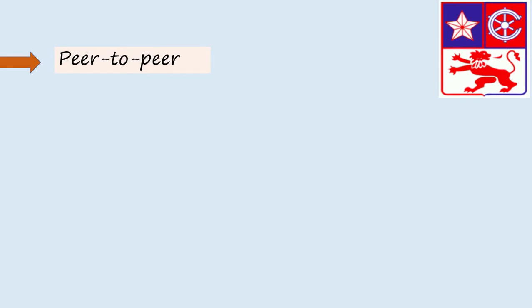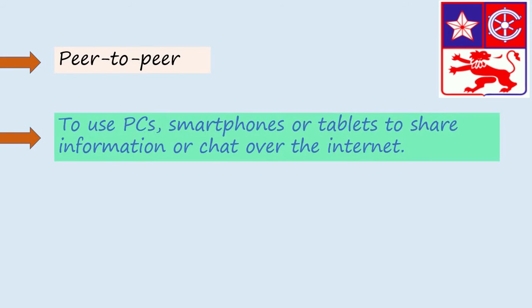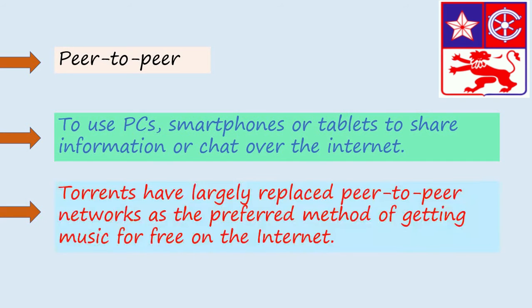Peer-to-peer. To use PCs, smartphones, or tablets to share information or chat over the internet. For example, torrents have largely replaced peer-to-peer networks as the preferred method of getting music for free on the internet.